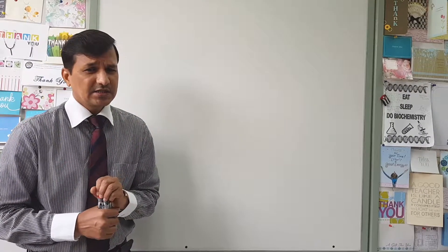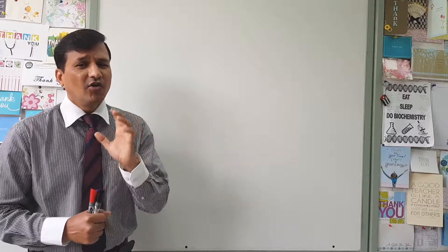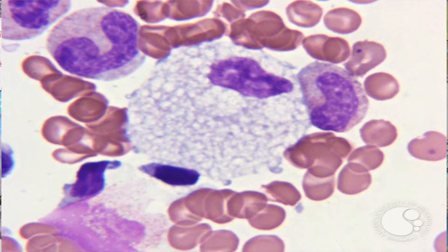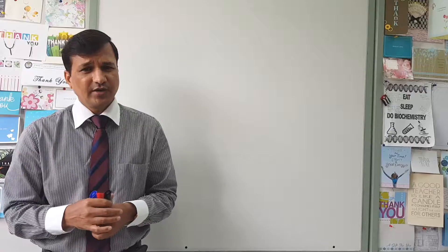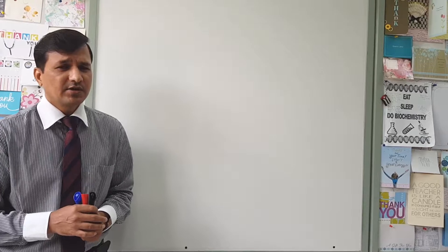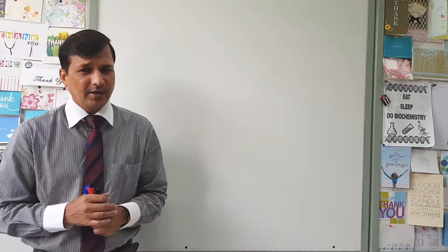Another feature of Niemann-Pick disease is foam cells in the histopathological section — accumulation of sphingomyelin in the cytoplasm of cells, especially in the lysosomes, which are referred to as foam cells. Patients with Niemann-Pick disease will also have a cherry red macula.